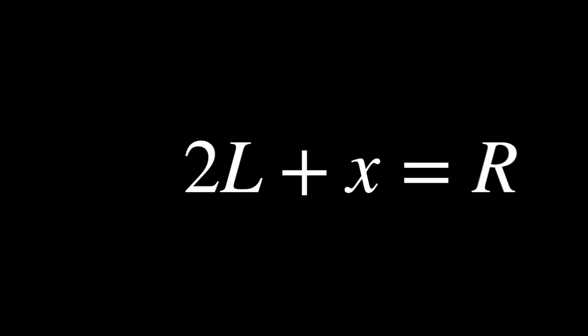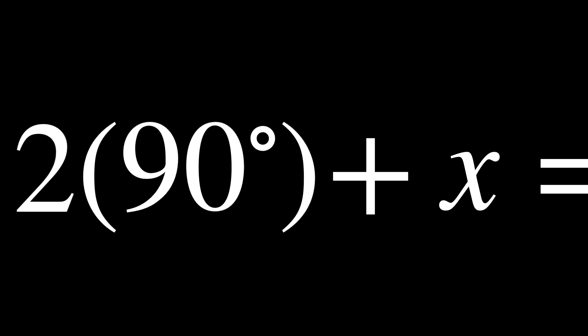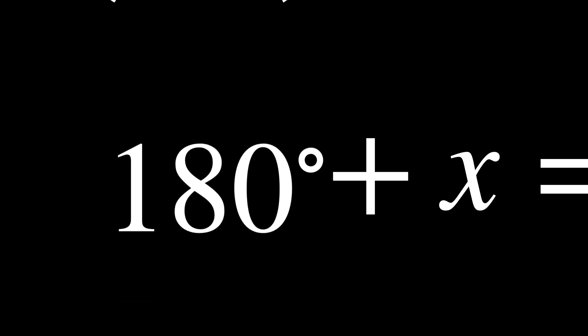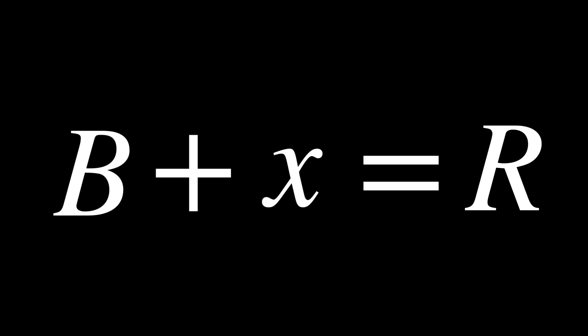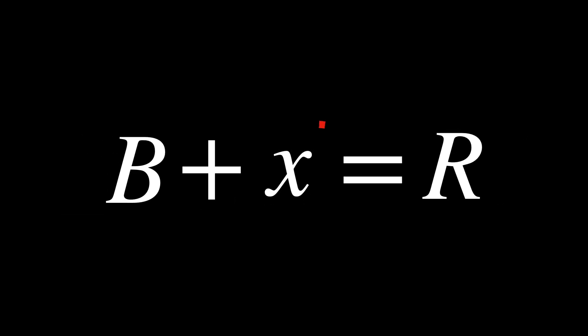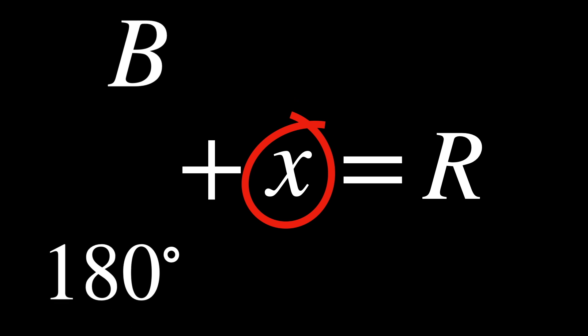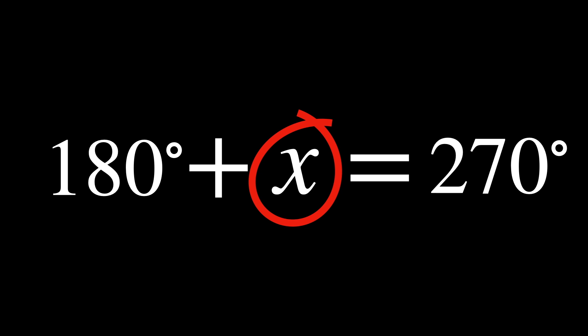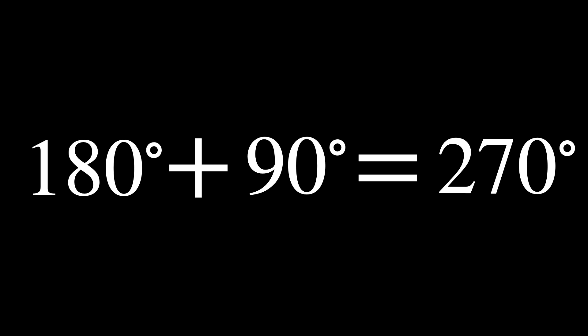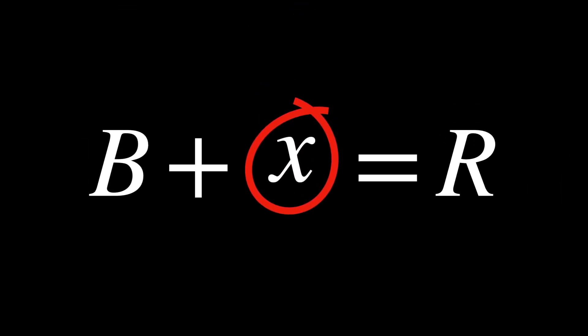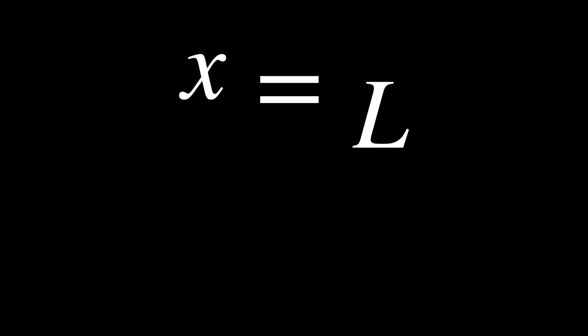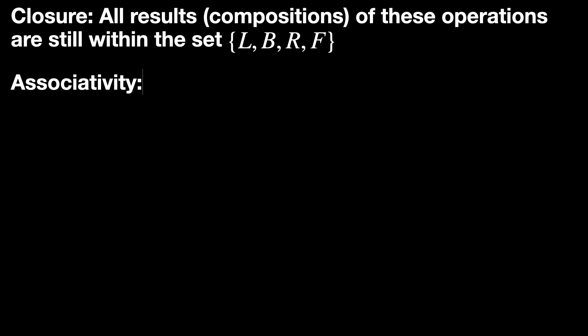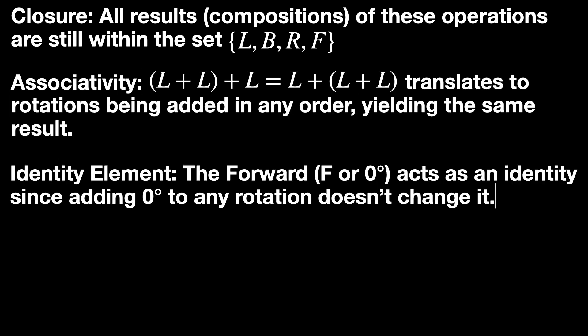A left turn L is 90 degrees. Therefore, two lefts, 2L, amount to 180 degrees, which is the same as a back B. You need to determine what rotation, when added to a back (180 degrees), results in a right (270 degrees). The rotation that needs to be added to 180 degrees to achieve 270 degrees is 90 degrees, which corresponds to a left, L. So x equals L. This demonstrates that group properties go beyond basic arithmetic, since this example illustrates all four group properties being preserved.